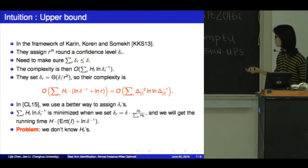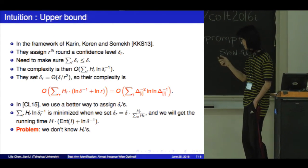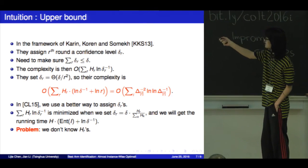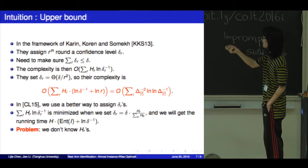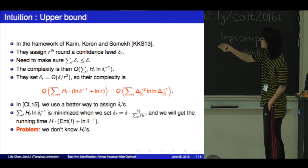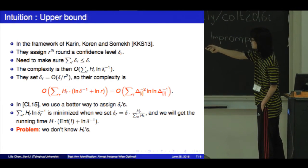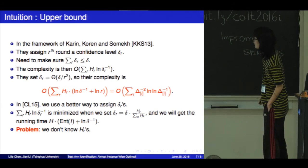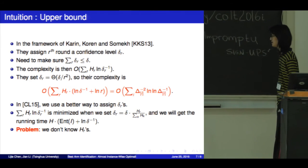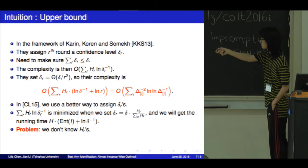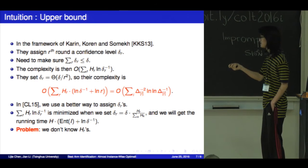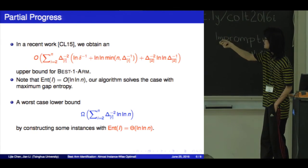You may think it's quite strange why we come up with this quantity, so let me show you some intuition. In the framework of Karing et al., they assign a confidence level delta_r, and they need to make sure that the sum of these delta_r's is smaller than delta. The complexity is just the sum of h_r times log 1 over delta_r. This sets delta_r to be theta of delta over r squared. So the complexity can be computed accordingly. But actually, this setting is not optimal. In our recent work with Jian Li, we use a better way to assign delta_r's to improve the algorithm to a better complexity.